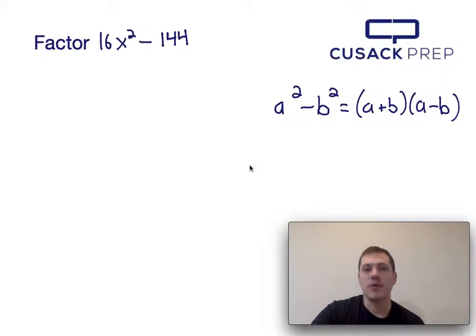Now 16x squared and 144 are both perfect squares, so we could start with that, but we actually notice that they're both divisible by 16.